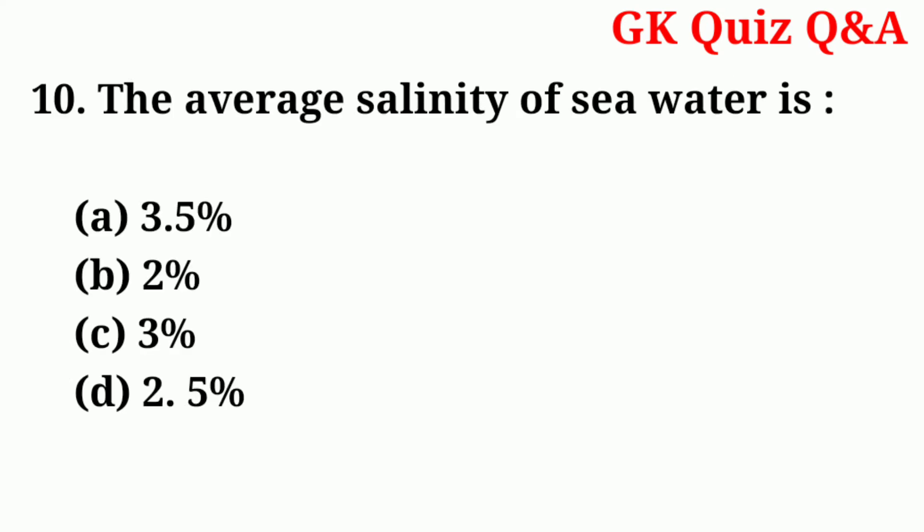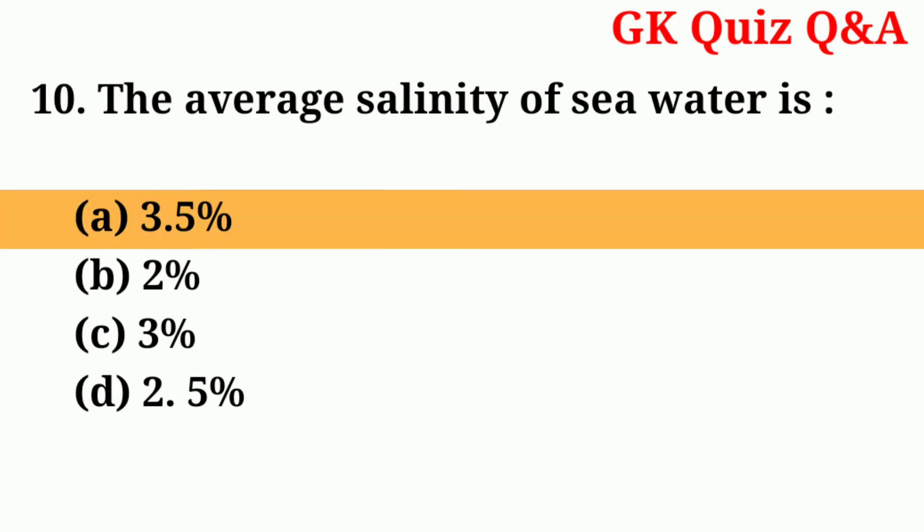Number ten: the average salinity of sea water is — answer: number A — 3.5 percent.